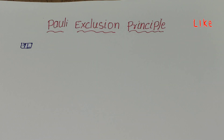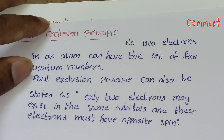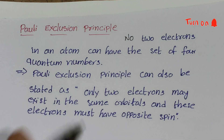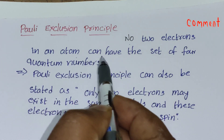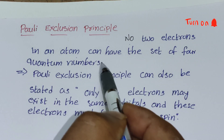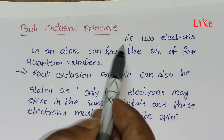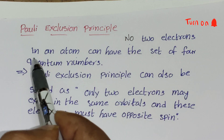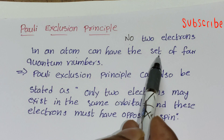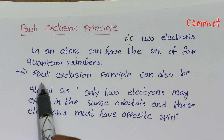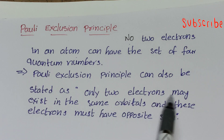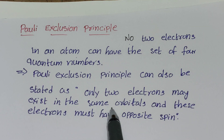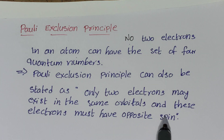According to the Pauli's Exclusion Principle, no two electrons in an atom can have the same set of four quantum numbers. The principle can also be stated as: only two electrons may exist in the same orbital, and those electrons must have opposite spin.